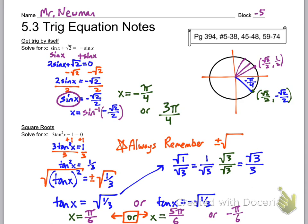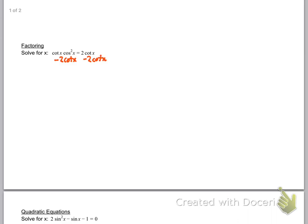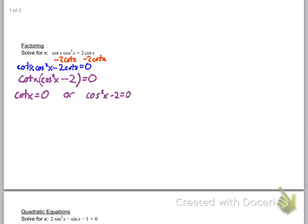The next problem requires us to factor. I'm going to get all trig functions on one side — which may seem counterintuitive. When I subtract 2 cotangent of X from both sides, I have something I can factor out the cotangent from, giving me cotangent of X times (cosine squared of X minus 2) equals 0. I now have two separate equations: cotangent of X equals 0, or cosine squared of X minus 2 equals 0. I need to follow both rabbit holes. For cotangent, thinking of cosine over sine, cosine of X equals 0 at pi over 2, so one solution is X equals pi over 2.